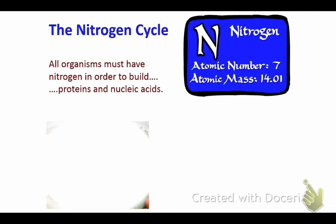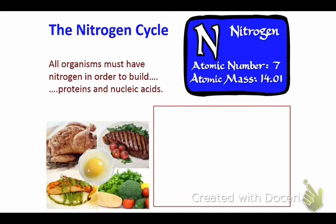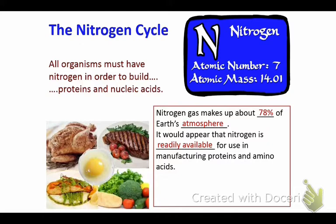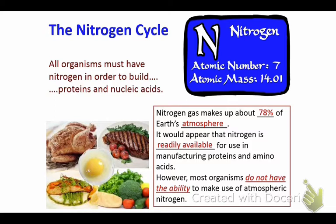Obviously, here are proteins — there's a Thanksgiving protein for you. Nitrogen gas makes up about 78% of the Earth's atmosphere. You are currently inhaling nitrogen as we speak. It would appear that nitrogen is readily available for use in manufacturing proteins and amino acids. However, most organisms do not have the ability to make use of atmospheric nitrogen.